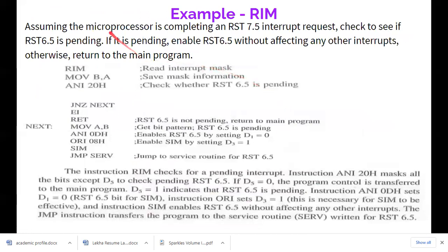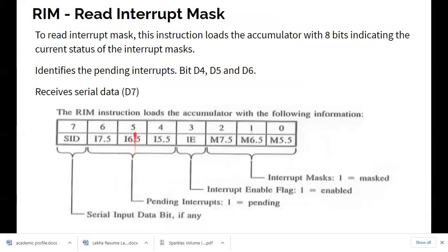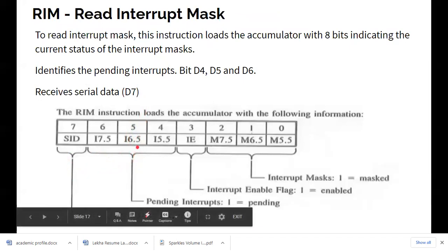Example: assume the microprocessor is completing an RST 7.5 request. Check whether RST 6.5 is pending; if pending, enable RST 6.5 without affecting any other interrupt. First, execute RIM to read the interrupt status into the accumulator. Move the accumulator value to register B. Then execute ANI 20h — that is, AND with 00100000 binary — to isolate only D5, which is the RST 6.5 pending bit.